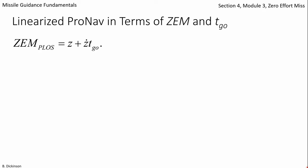This formula for zero effort miss may be familiar from our linearized pronav. Recall from section 3, module 1, we obtain the line of sight rate as follows.